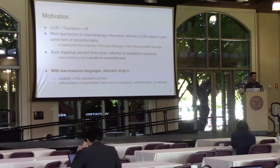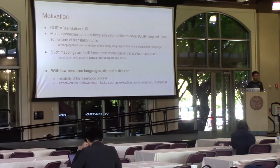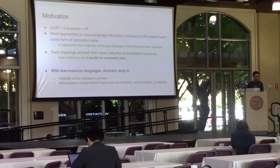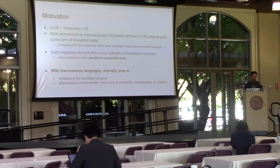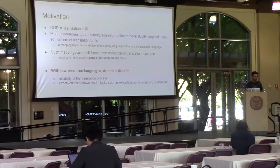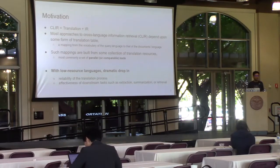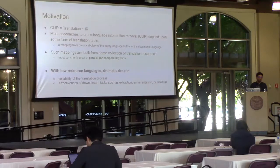Such mappings are usually built from some sort of translation resources. It could be sentence-level parallel text or comparable terminology. But when it comes to low-resource languages, we see a dramatic drop in the effectiveness of this translation process, and it basically causes many problems for downstream NLP tasks such as information extraction, summarization, or our main focus of this paper, information retrieval.